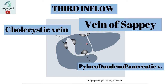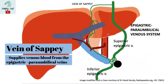Let us name the three inflow vessels. First, the vein of Sappey. The vein of Sappey provides third inflow into the liver at the region near the falciform ligament. It has a superior vein and an inferior vein, receiving blood from the superior epigastric, inferior epigastric, and paraumbilical veins — collectively called the epigastric paraumbilical venous system.